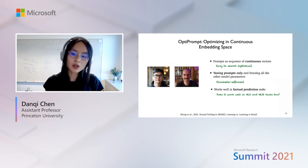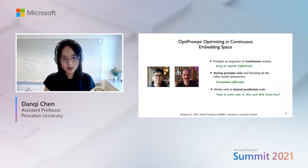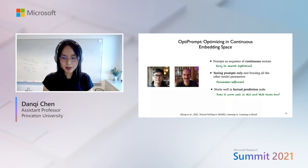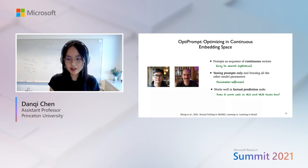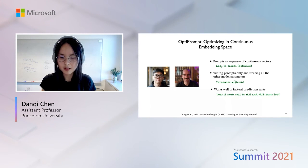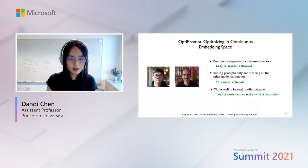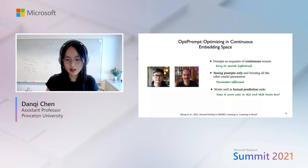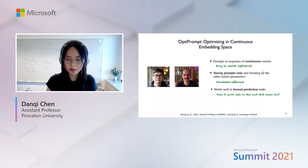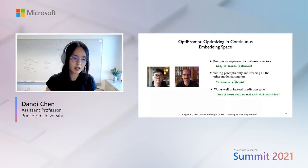In the next few minutes, I'll talk about another work called OptiPrompt. The key idea here is to optimize continuous prompts in the embedding space. This work was done by my PhD students Zexuan Zhong and Dan Friedman. The key idea is that we can represent prompts as a sequence of continuous vectors, which are very easy to search and optimize. In this approach, we only tune the prompts and freeze all other model parameters — hence they can be viewed as a parameter-efficient solution. We demonstrate very good performance on a factual prediction task.